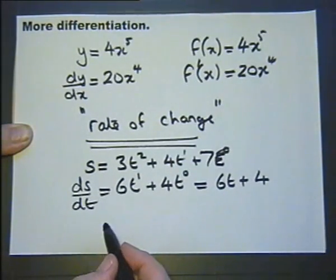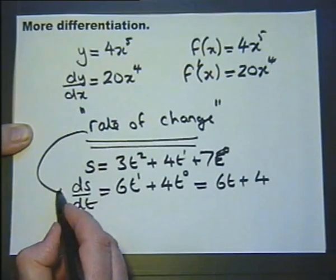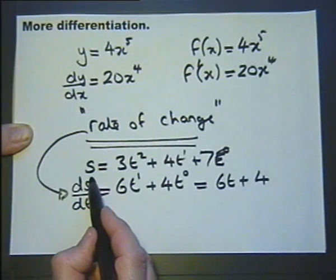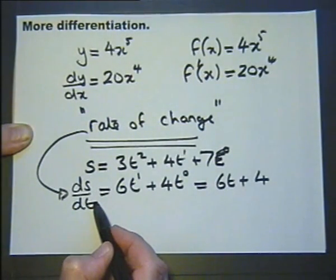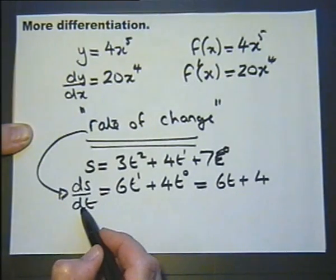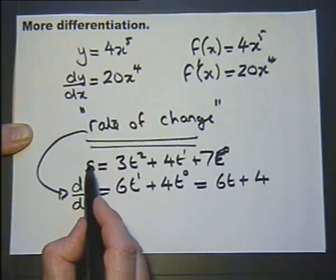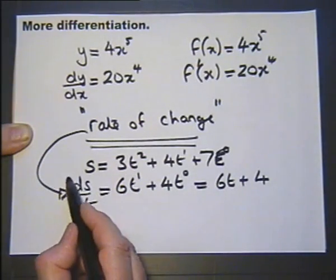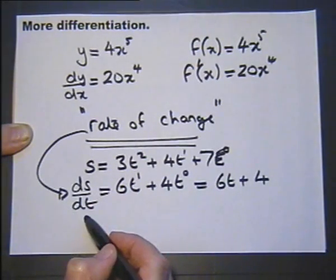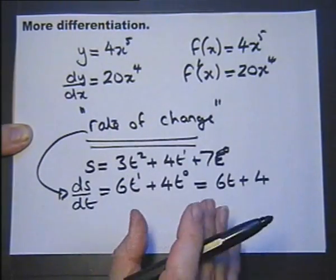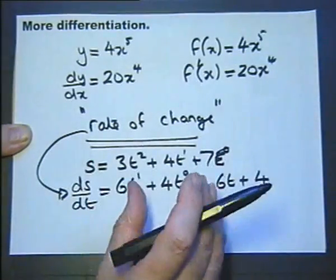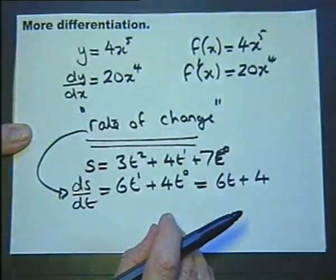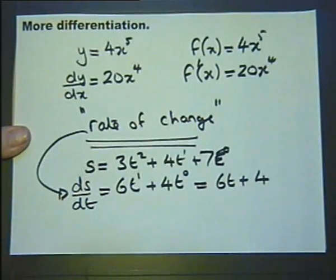But the other thing I wanted to mention is the rate of change. We say that this is the rate of change of s with respect to t. And if this was distance and time, this would be the rate of change of distance with respect to time. Now all the things I've mentioned here, I will be mentioning again. But let's look at this more differentiation.